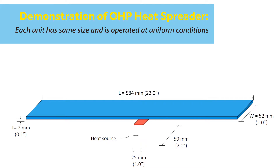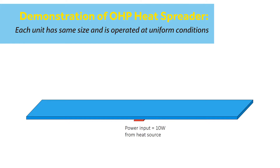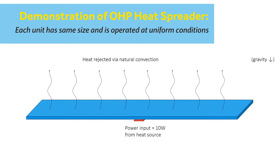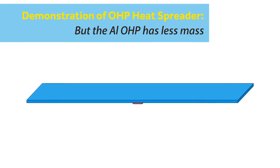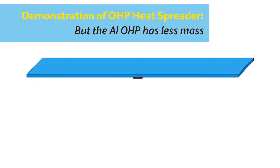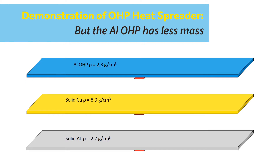Each spreader is attached to an identically sized 10 watt heat source. Before adding power, the spreaders all have uniform matching temperatures of ambient air at 22 degrees Celsius.